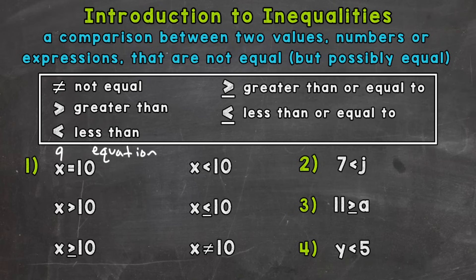For number two, we have x is greater than 10. Remember, you always want the wider, open side of an inequality symbol facing the greater value. So x is greater than 10 here, meaning any number greater than 10 would be a solution for that inequality. There's an infinite amount of correct solutions.